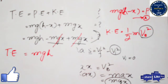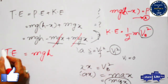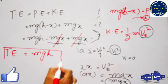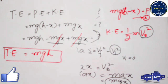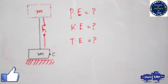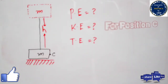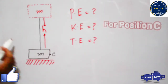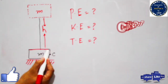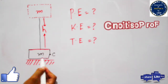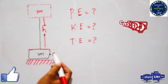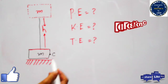This shows that the total energy at any point — whether point A, point B, or point C — is equal to mgh. In the third case, when the body is about to strike the surface of the Earth, we calculate the total energy at that point.